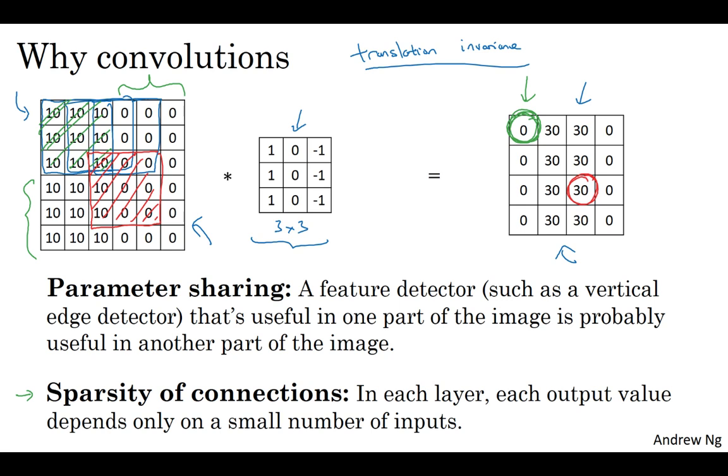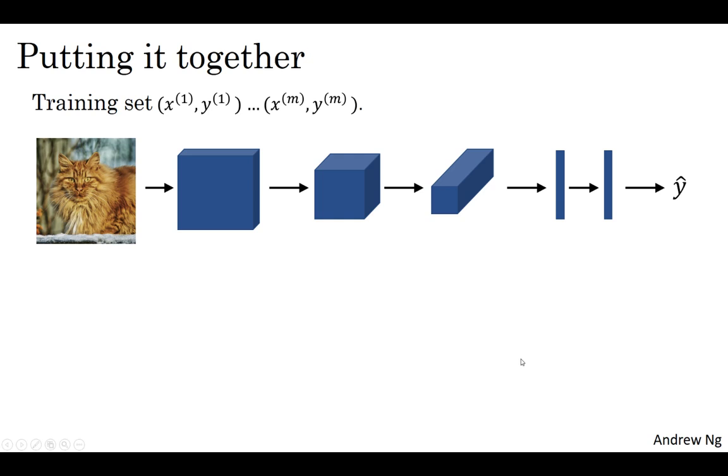So these are maybe a couple of reasons why convolutions or convolutional neural networks work so well in computer vision. Finally, let's put it all together and see how you can train one of these networks.